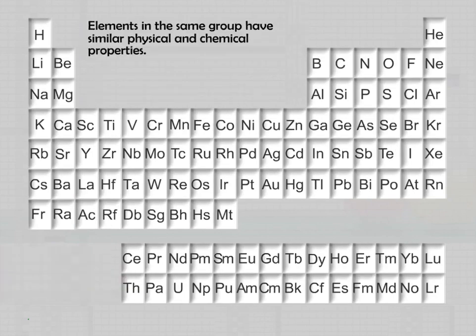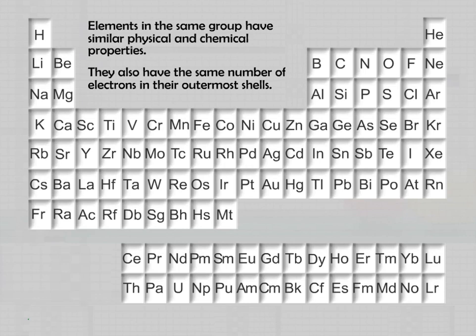Elements in the same group have similar physical and chemical properties. They also have the same number of electrons in their outermost shells.